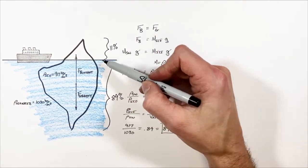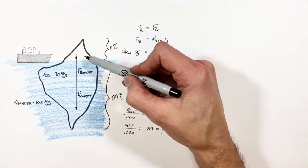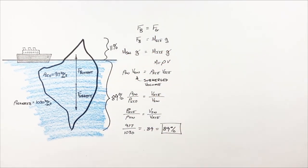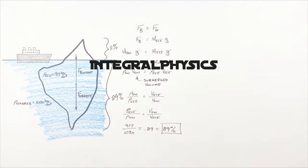That means if you see an iceberg on the ocean, only 11% of it is sticking up out of the water. Most of it is underneath the water. And on that note, that's all for now.